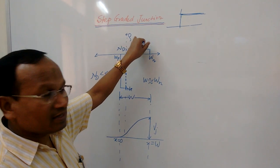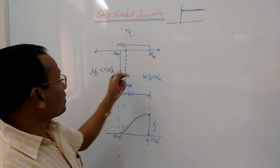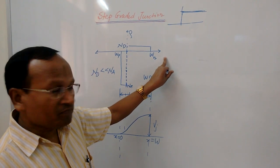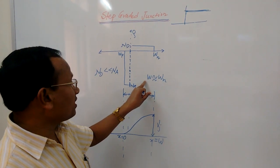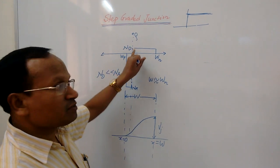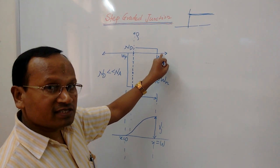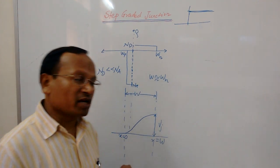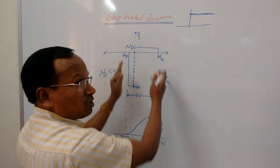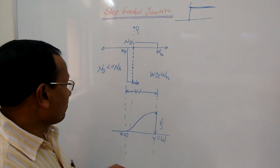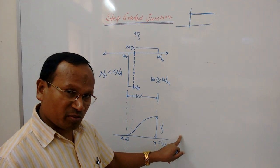This is the charge distribution, the charge density. This is the depletion layer width towards the N side, and this is towards the P side. The total depletion layer width is Wp plus Wn. But we can see that Wp is much much smaller as compared to Wn, so we can approximately write W is equal to Wn. Nd is spread over the larger region and Na over the smaller region. This is because the number of positive charge carriers and negative charge carriers always remain equal inside the depletion layer.